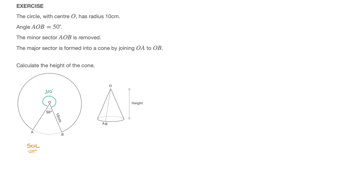We need to find this cone's height. The formulas that come to mind when thinking of a cone's height: first, the volume of a cone, where volume equals one third pi r squared times h, where r sub c is the radius at the base of the cone. This formula involves the height we want, but also involves the radius at the base and the cone's volume — which we're not given. So that leads to another unknown. Let's see if there's something else involving the height we can use.